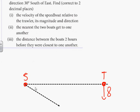30 degrees south of east means coming down at this angle here, 30 degrees south of east, and it's going at 20. Find the velocity of the speedboat relative to the trawler, its magnitude and its direction. The second letter is always whose opinion it is - relative to the trawler. The trawler thinks I'm going this fast.